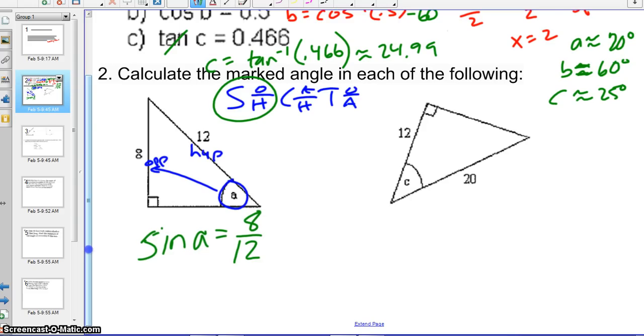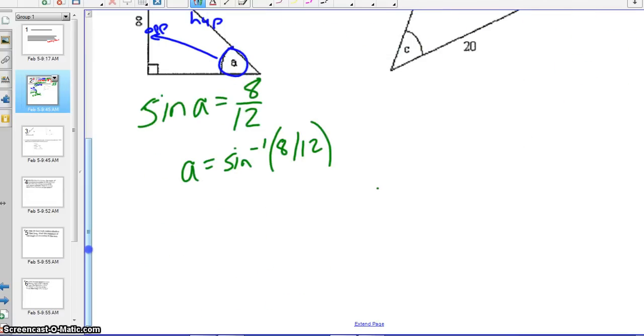Now, just like we talked about, in order to solve for A, we need to take the inverse sine of both sides. And that's what we're going to type into our calculator, the inverse sine of 8 over 12. When you type that in, we get A is approximately 42 degrees, because it's 41.8.